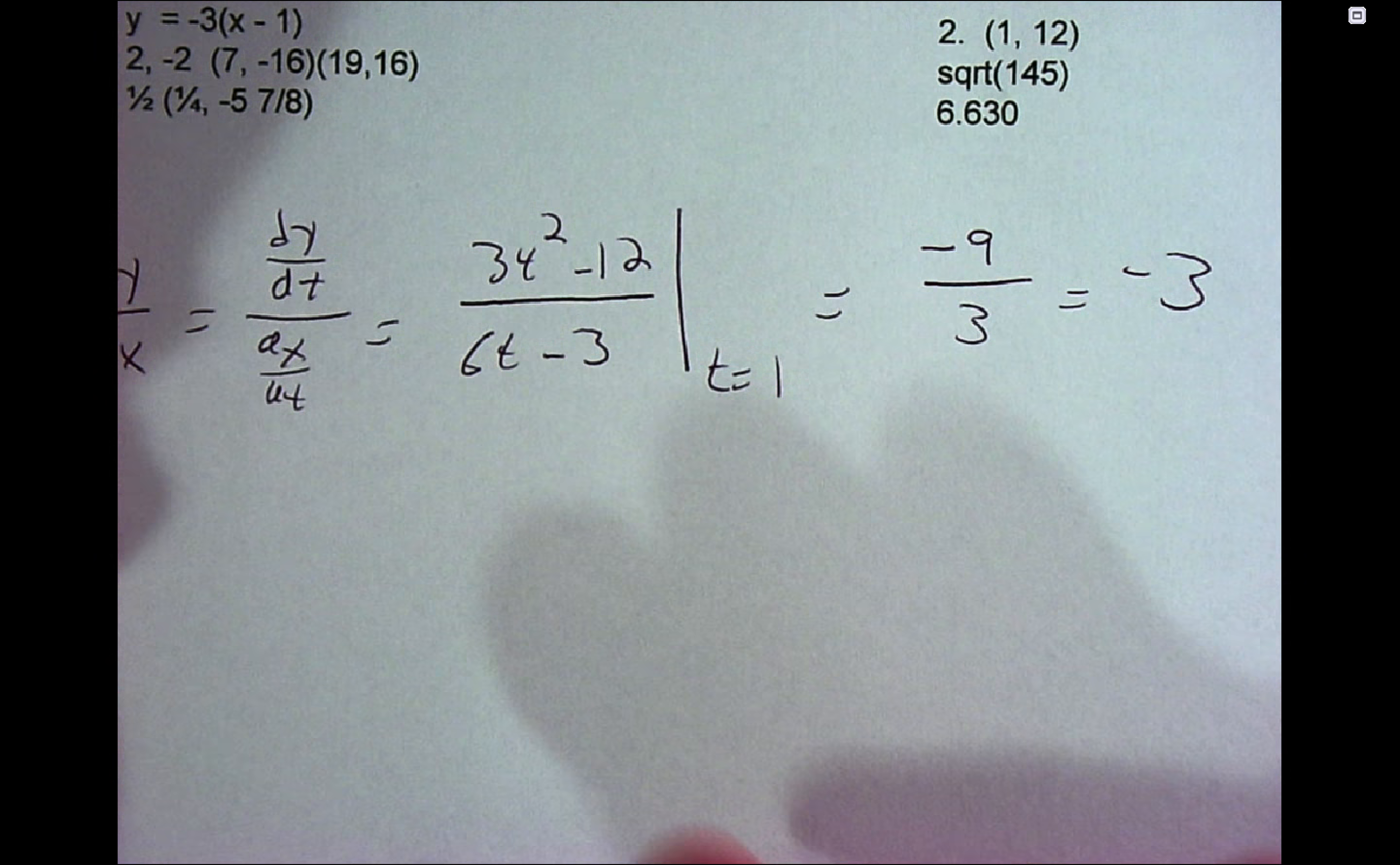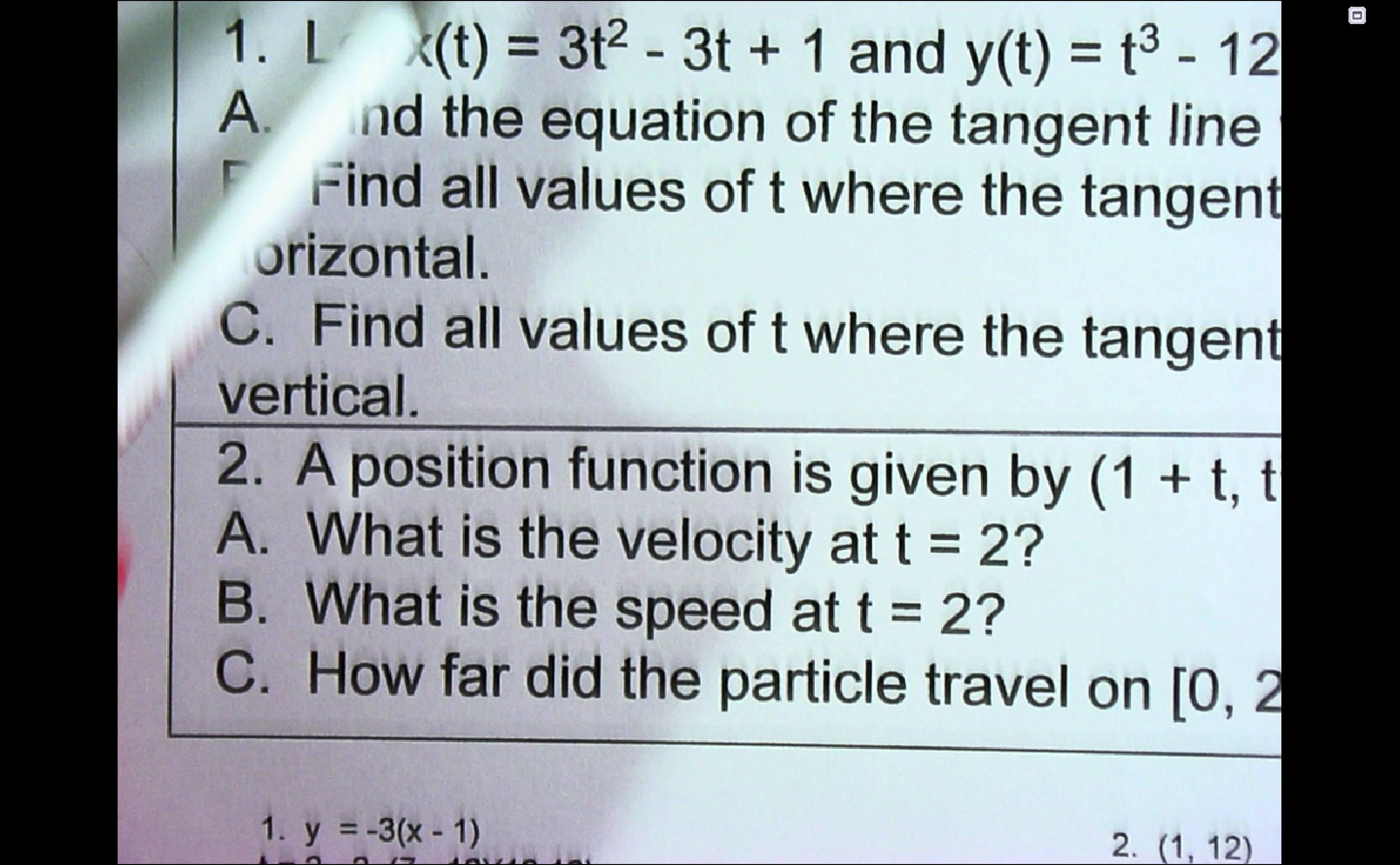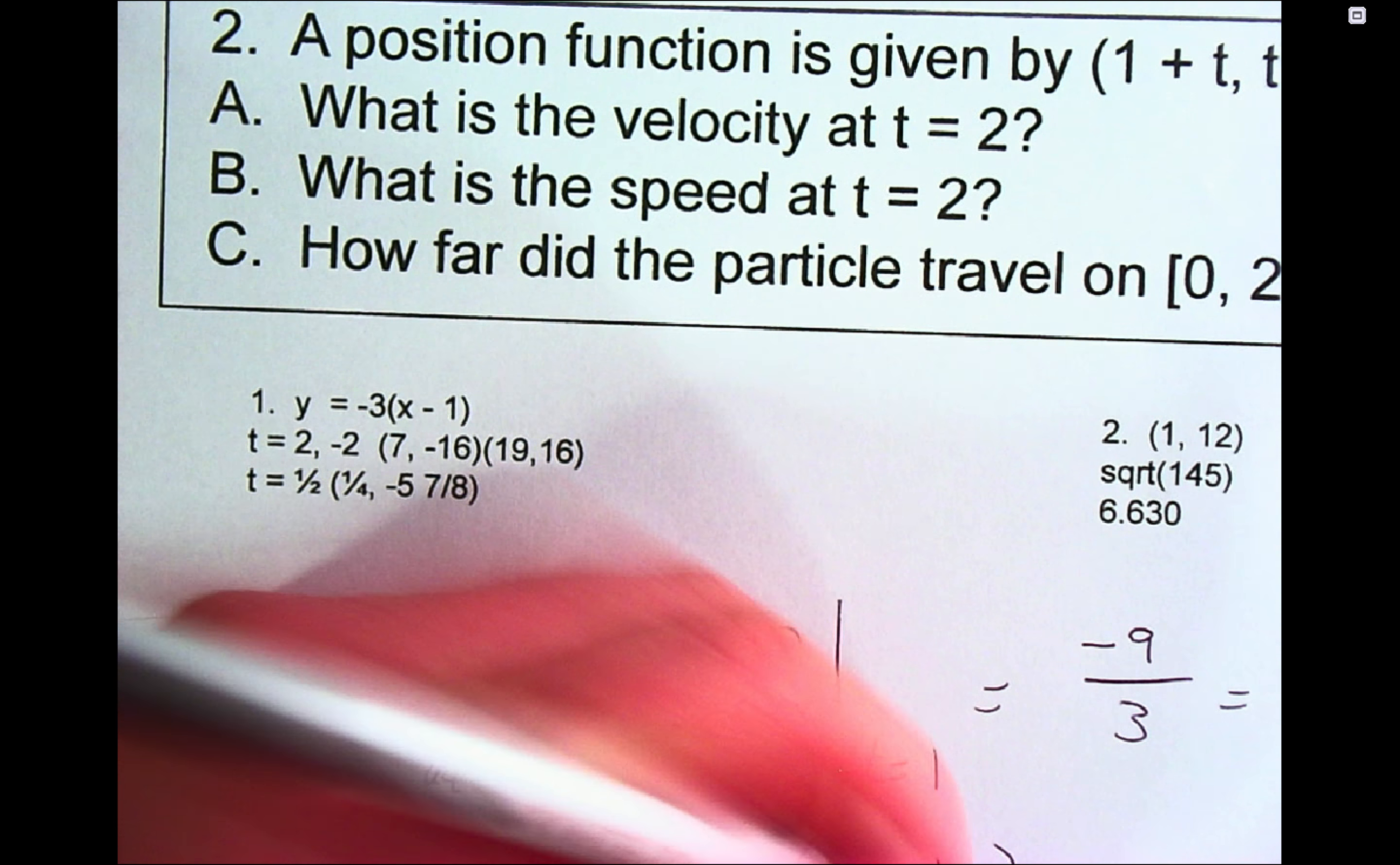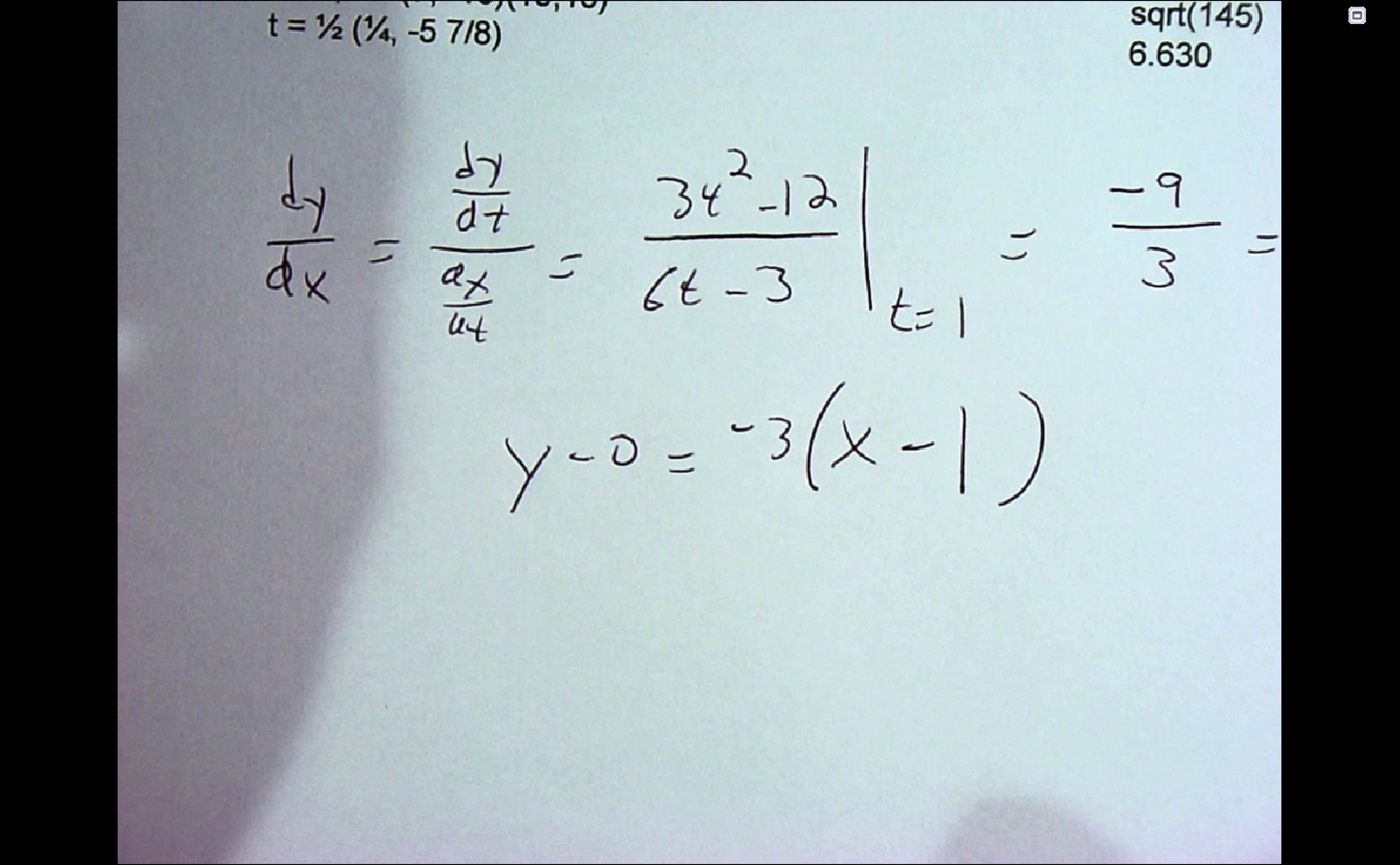And so we know we're going to have y equals the slope, and then we need our x and y coordinates, and for that we go back to the original equations and plug in 1 to both of those. So when we plug 1 in for the x equation, 3 minus 3 plus 1, so that would be 1 for the x coordinate. And when we plug in 1 into the y equation, we get 0, so y minus 0 if you want to write that. So there is the answer to the first one, 1a.